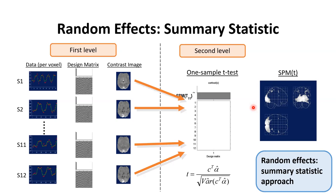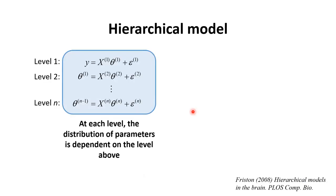That's how to do a random effects analysis with the summary statistic approach. We had one summary statistic per subject per voxel, which we fed into the second level analysis. However, it turns out this summary statistics approach isn't quite an exact method — the gold standard is implemented using hierarchical models.